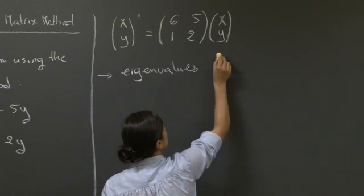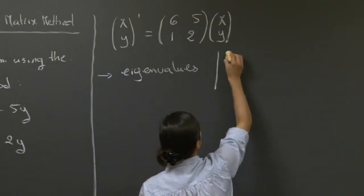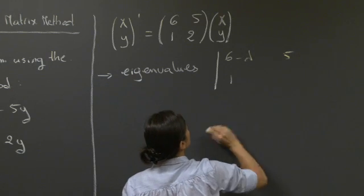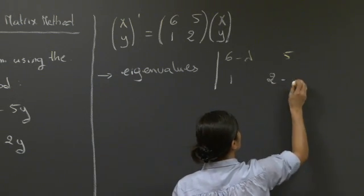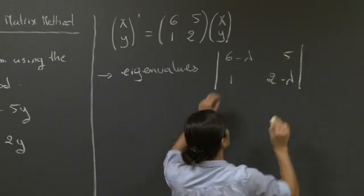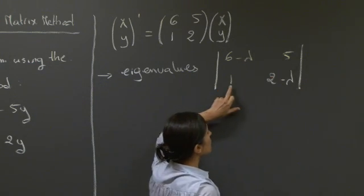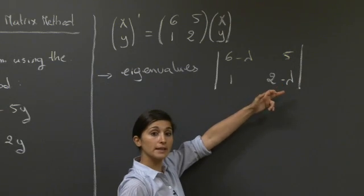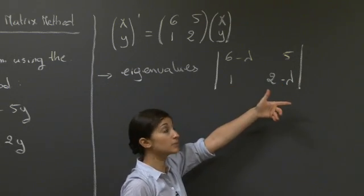The eigenvalues would be computed by seeking the determinant of this matrix in this form. 6 minus lambda, 5, 1, 2 minus lambda. We're going to have an equation on lambda, solve for lambda, and the solutions will be our eigenvalues.